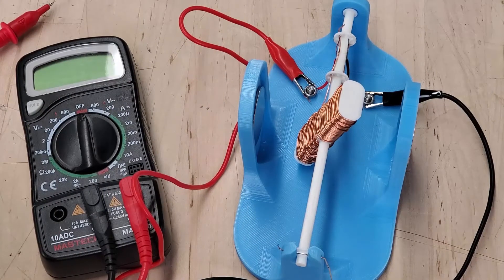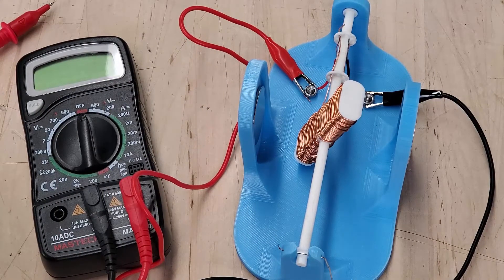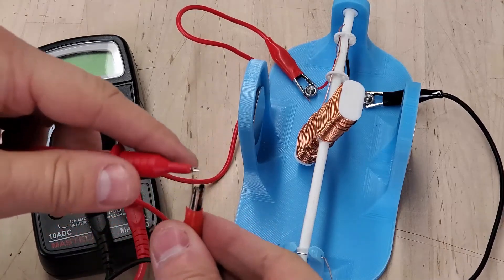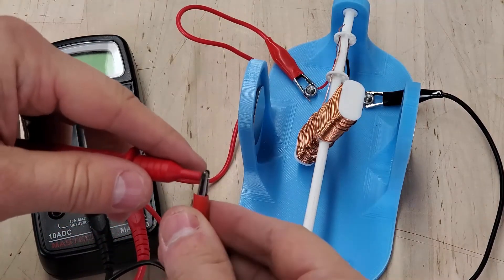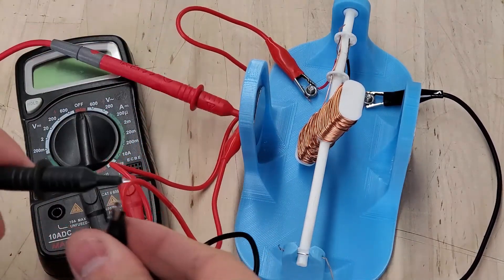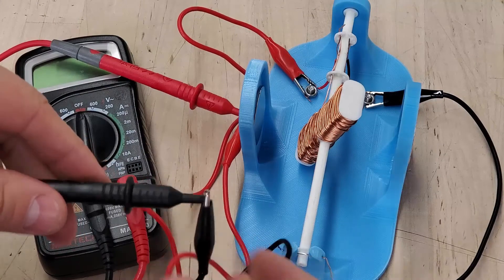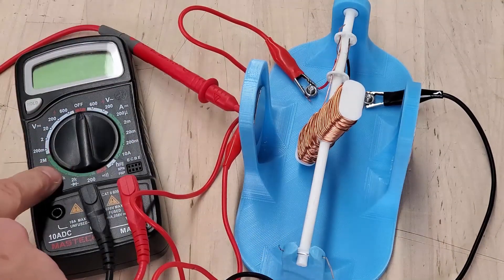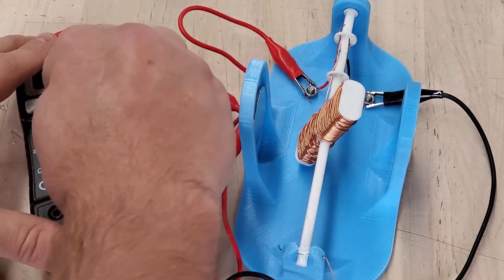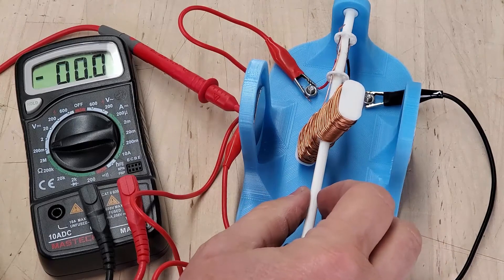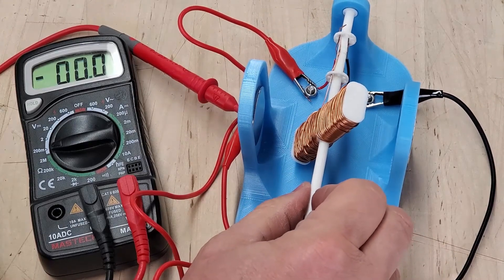The last thing I want to show you is how you can turn your DC motor into an actual generator. Take your alligator clip leads and attach them to your multimeter probe. Turn your multimeter to the smallest voltage setting. With your fingers, just give your motor shaft a twist and watch the reading on your multimeter.